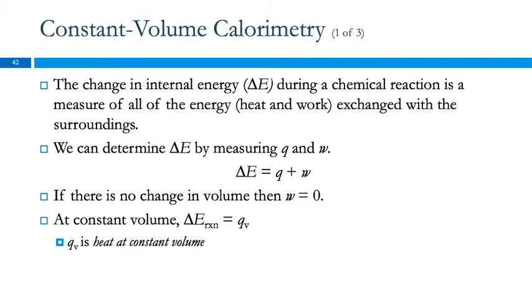We just learned that W equals negative P delta V. What if the change in volume is zero? Then the work is zero. If this is zero, then the work is zero. And so then it's simpler. We can say the change in internal energy is just equal to Q, the heat, because no work was done. So here we're saying delta E for the chemical reaction is equal to Q_V, and this subscript V signifies that we're talking about heat exchanged at constant volume.